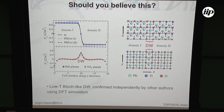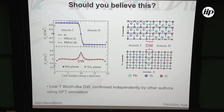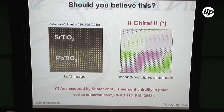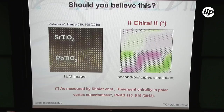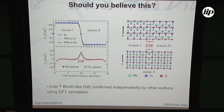Should you believe this? I am comparing the model with first principles, and yes, first principles say that our model is working. Going back to something that Ramesh showed — the beautiful vortex army structure in lead titanate layers in a superlattice — as shown in Ramesh's talk, they had evidence for chirality. The only way to explain this chirality is if at the domain walls you get an additional component of the polarization. This additional component in the superlattice is exactly the same one that you get in idealized domain walls in bulk lead titanate — it's exactly the same physics.